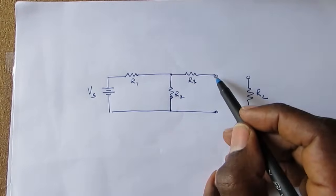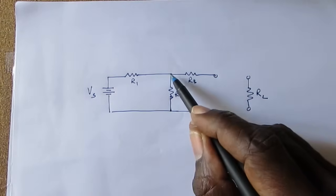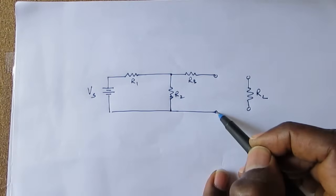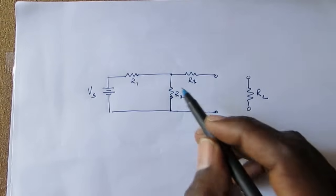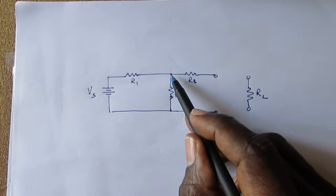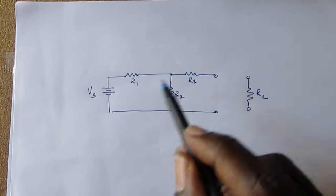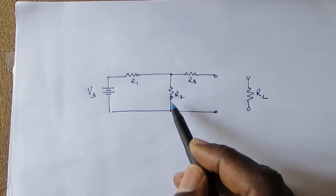So the Thevenin voltage would be the voltage measured at this point with respect to this point. How do we calculate the voltage at this point? Well, look carefully and you will see that this circuit is a voltage divider circuit.